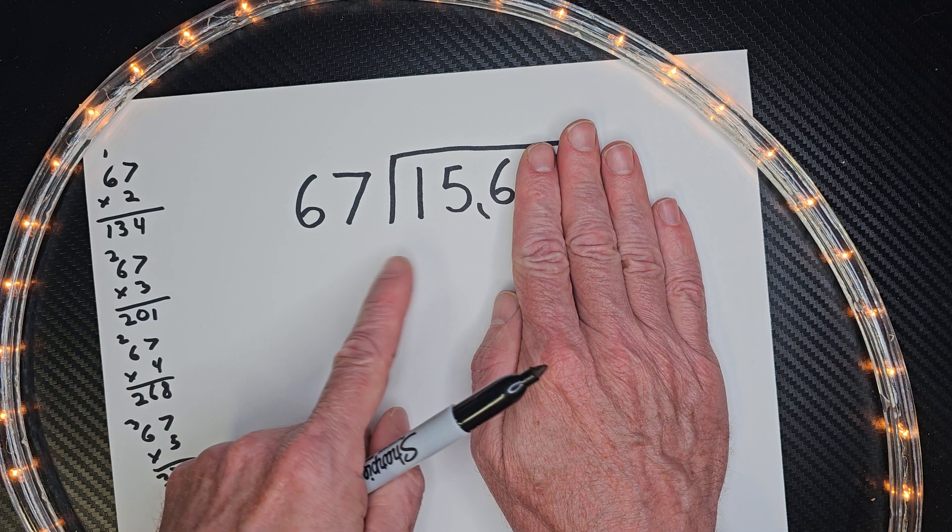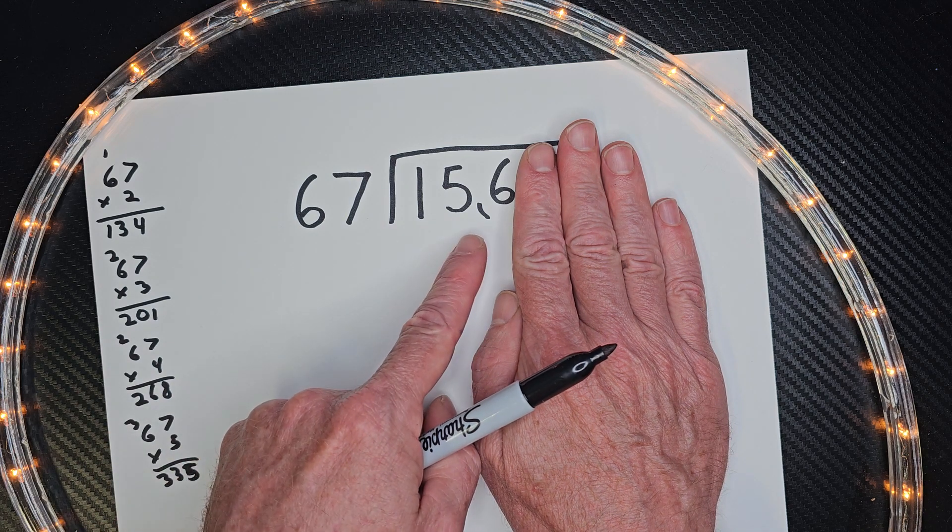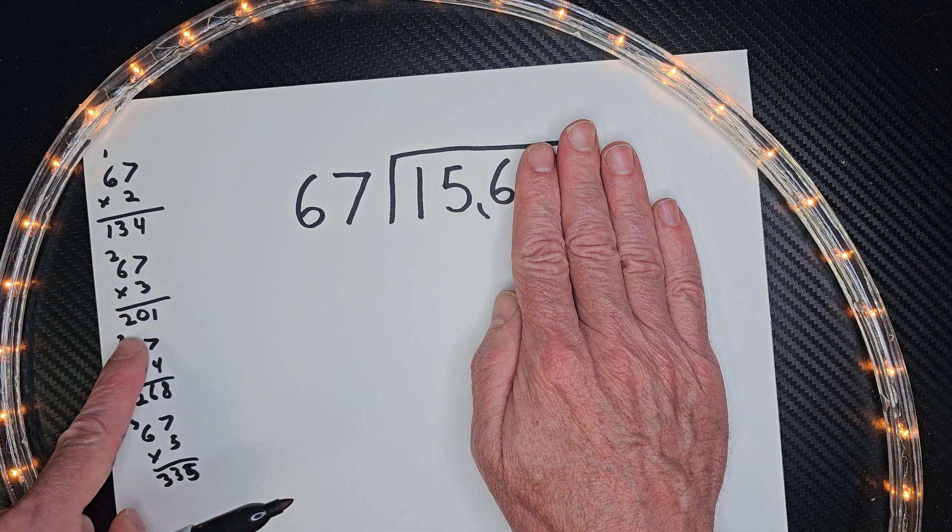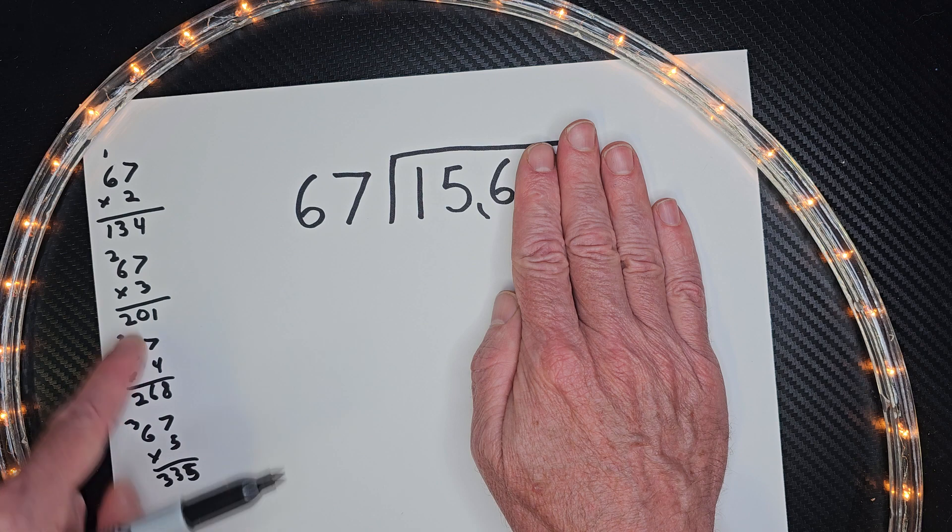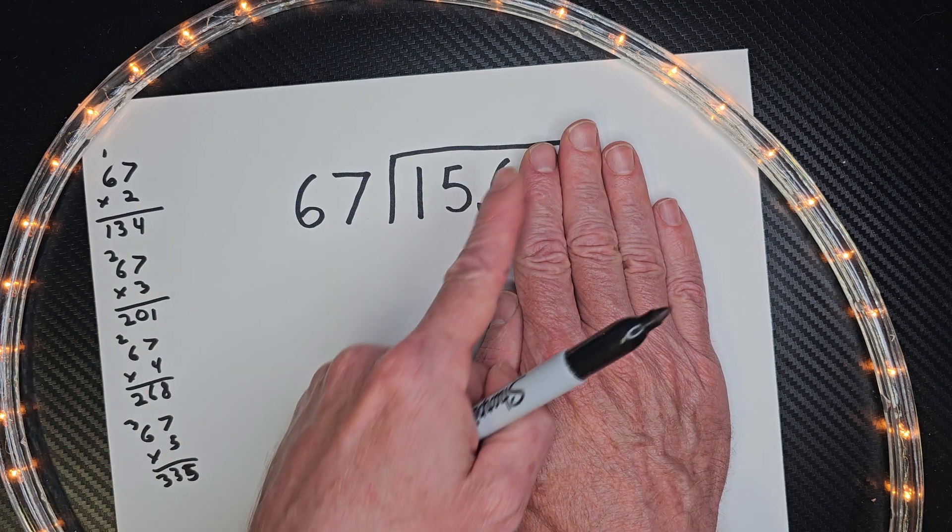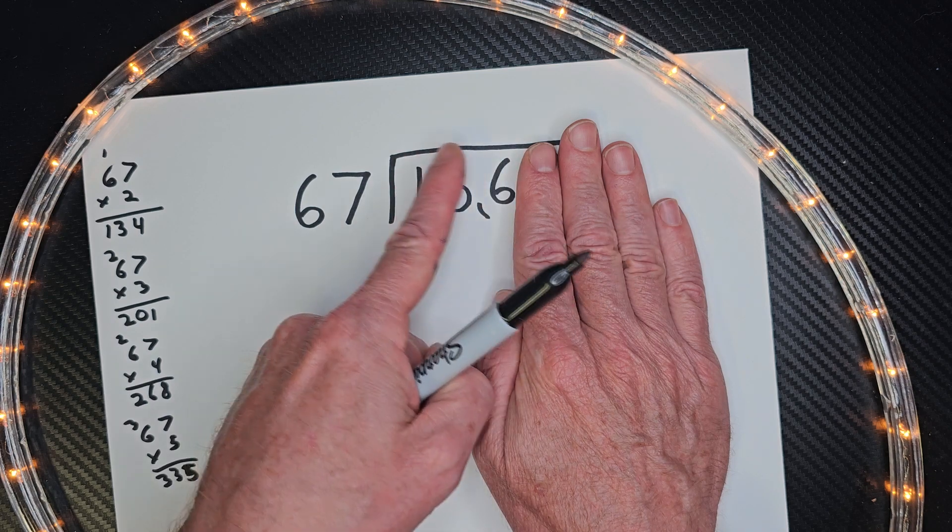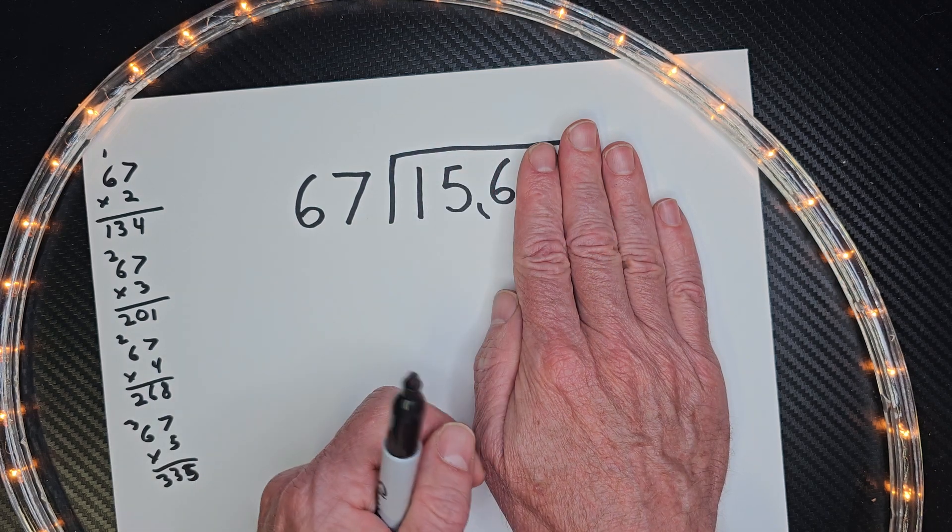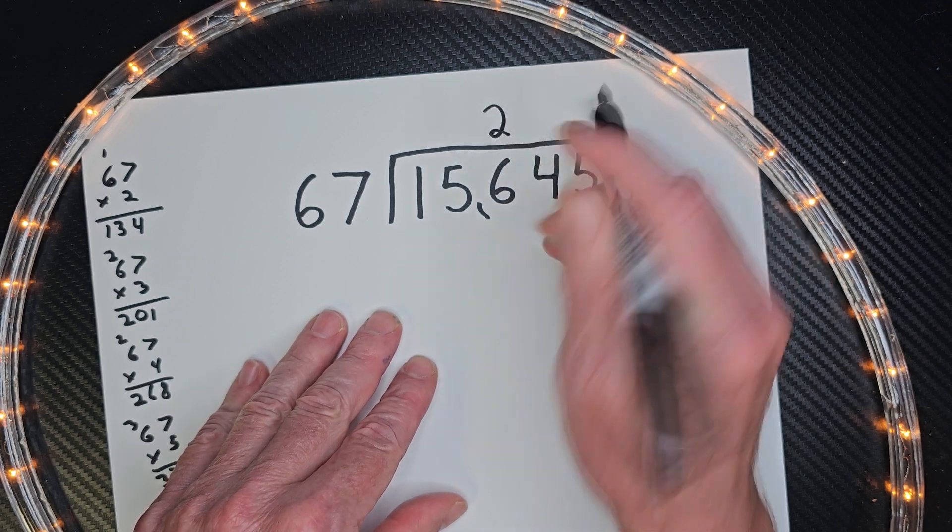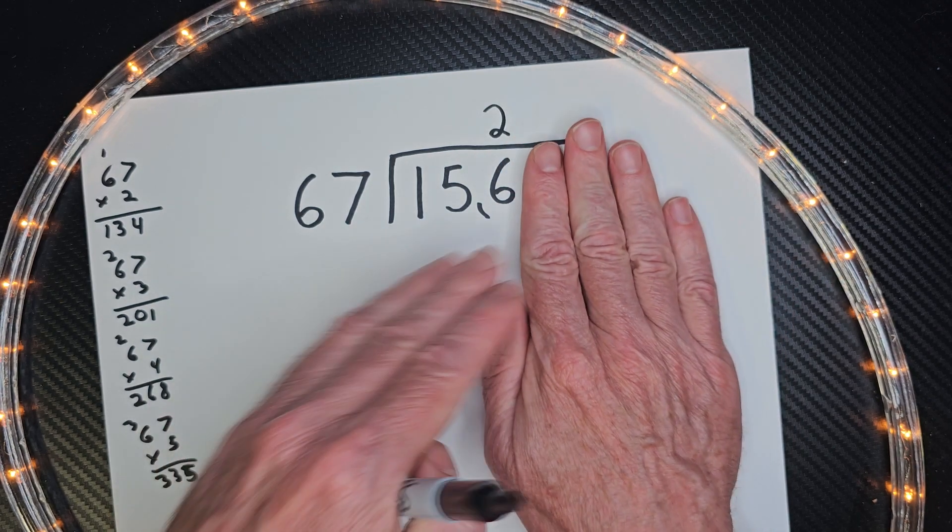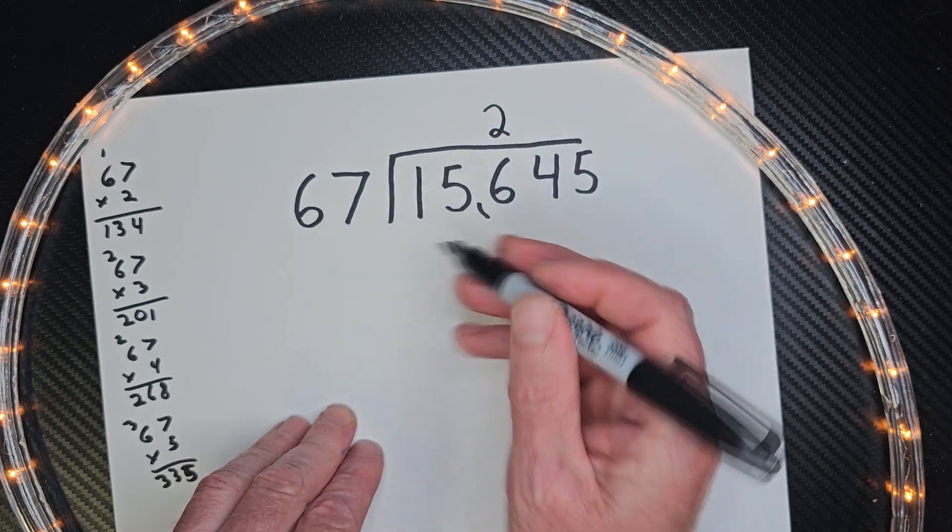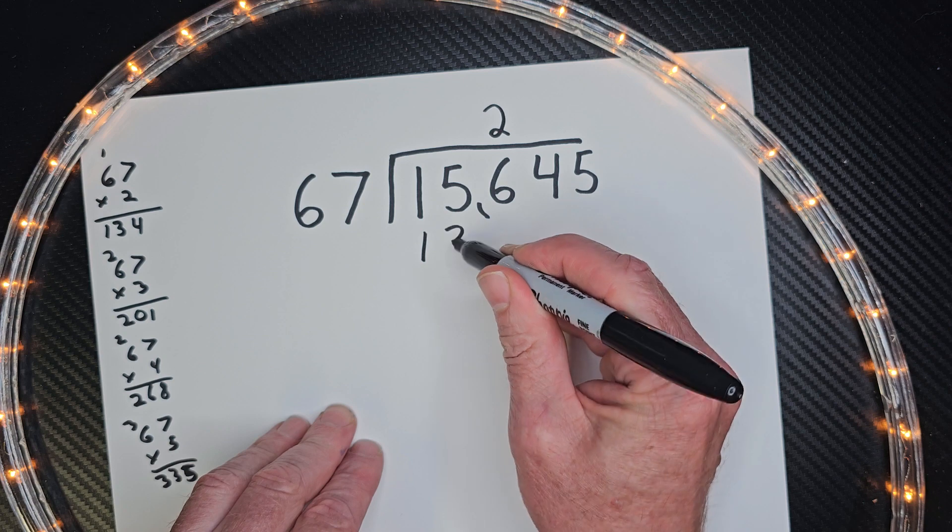So the closest number that I can go to 156 would be 134. If I did 3, that would be 201. So let's do 67 times 2. And I put the 2 right here. Don't put it above the 1 or the 5. You need to put it above the 6. The reason I put it above the 6 is because I'm dealing with this whole number right there.